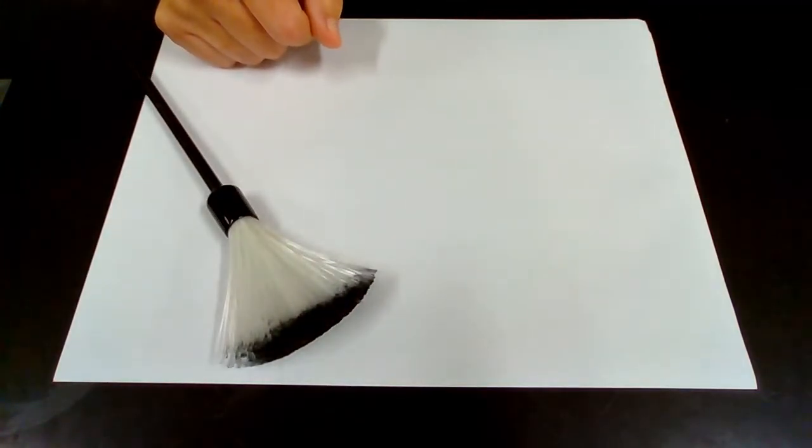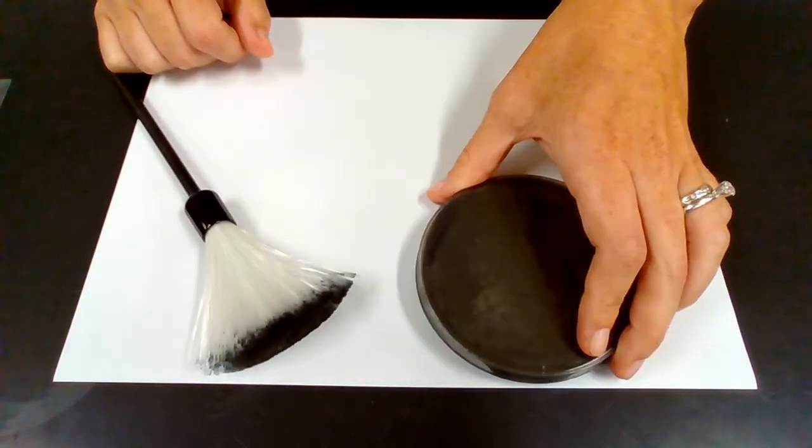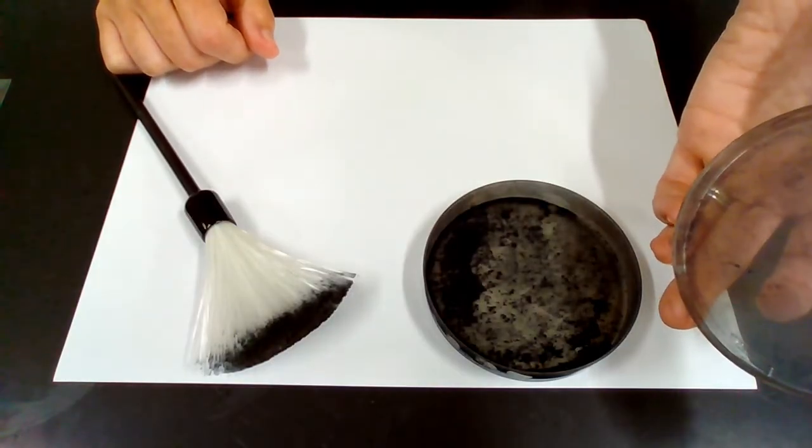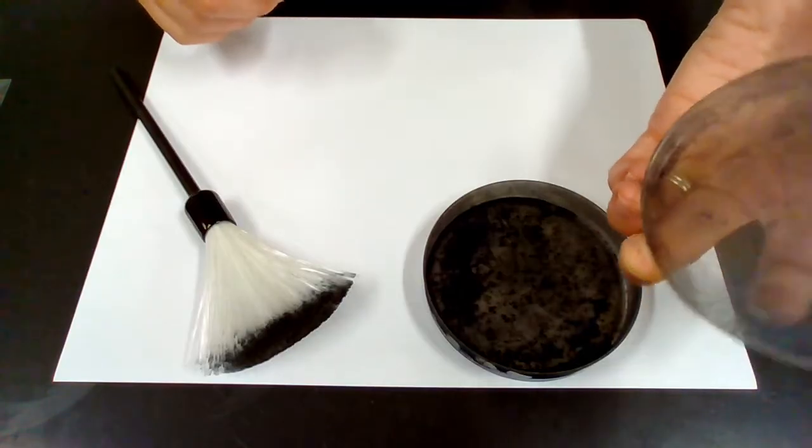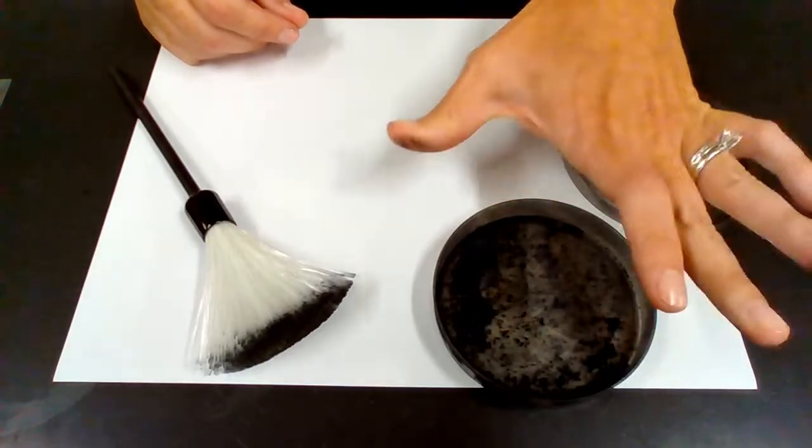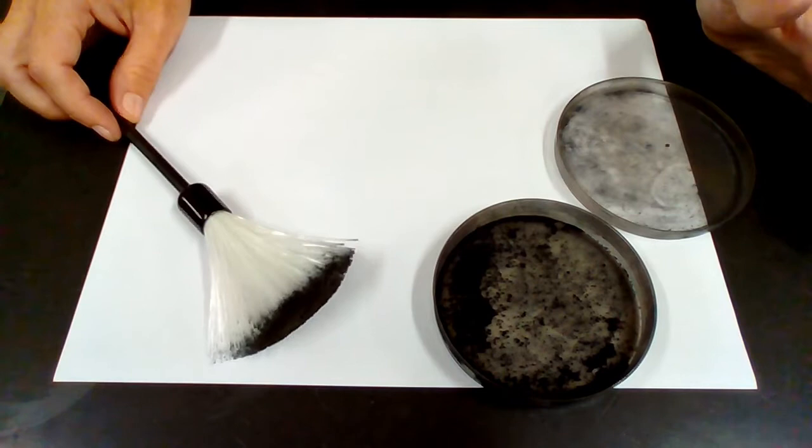I also have a small petri dish containing the black powder. This is such a fine carbon black powder that a little bit goes a really long way. So I like to just decant a little bit into a small petri dish so that it doesn't get too messy and out of control.